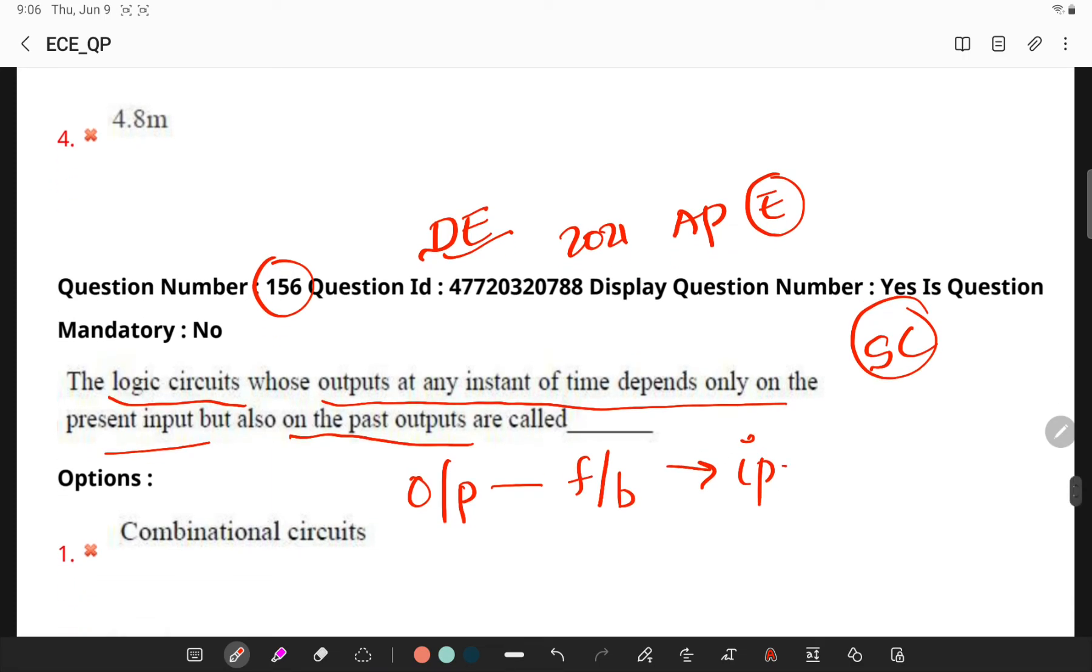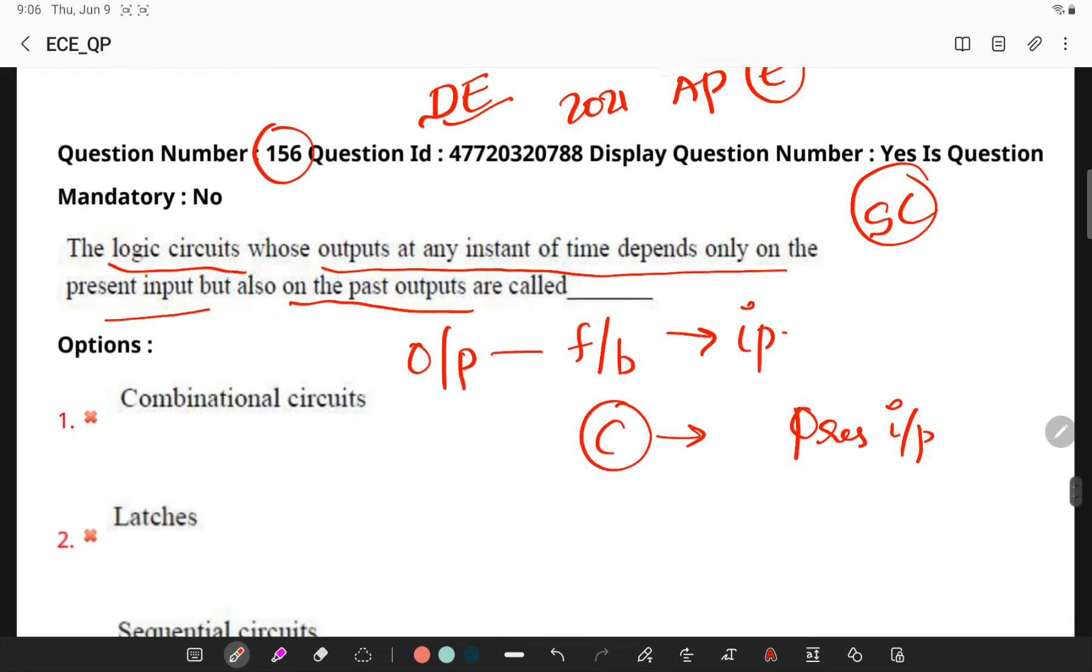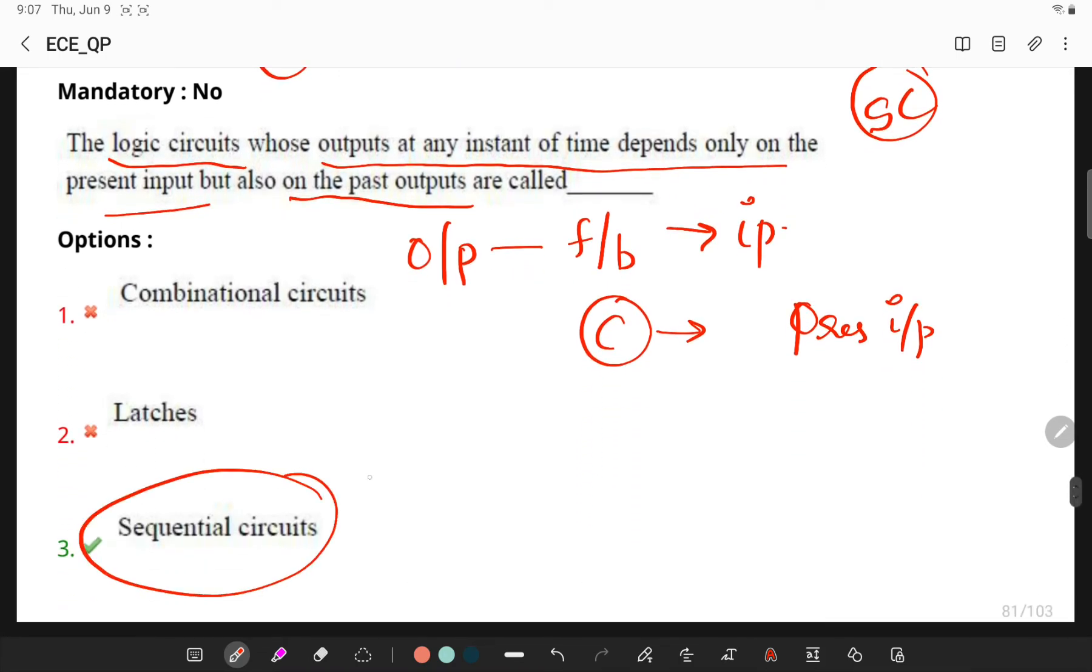So, these circuits, outputs at any instant of time depends only on the present input but also on the past inputs. Unlike sequential circuits, we have combinational circuits whose outputs depends only on the present input. Sequential circuits have this feedback concept which you have to understand.